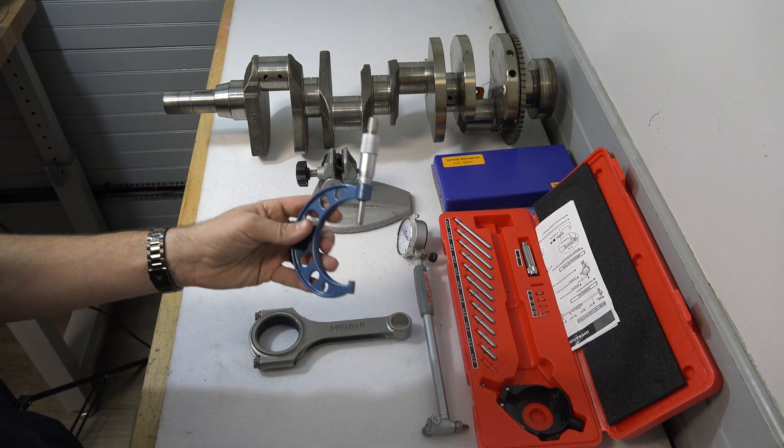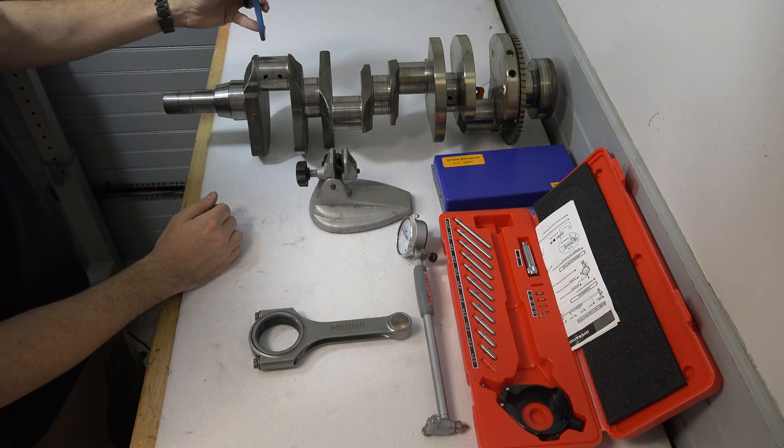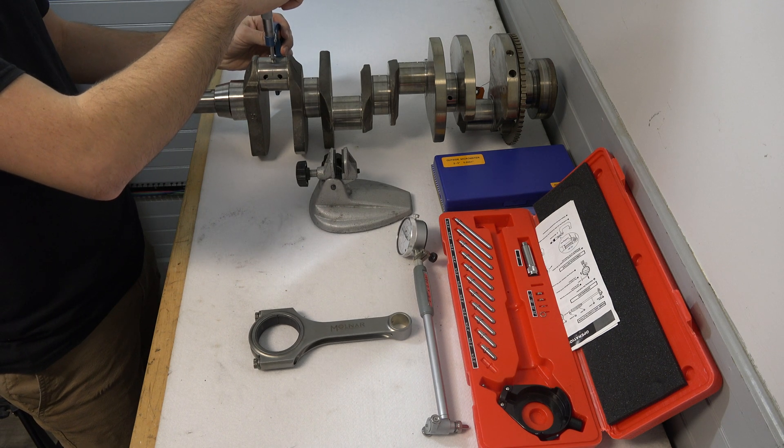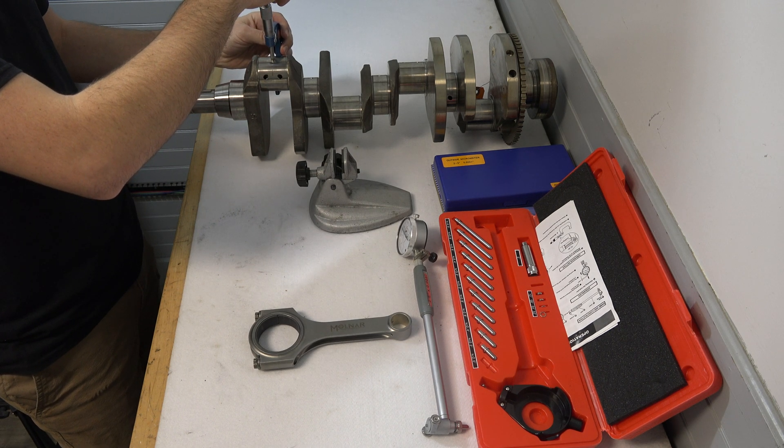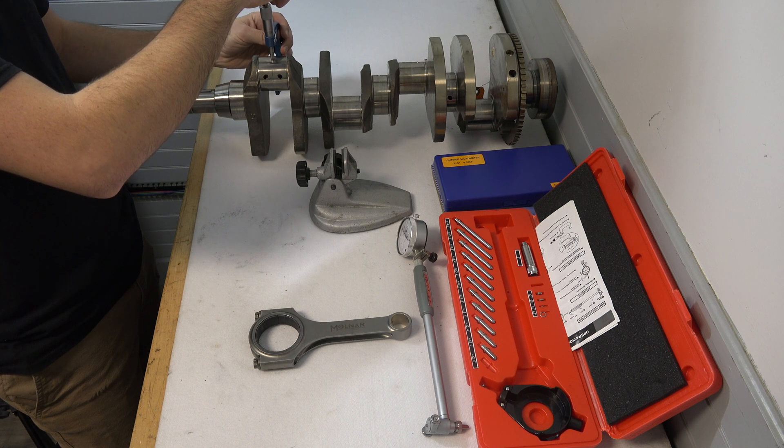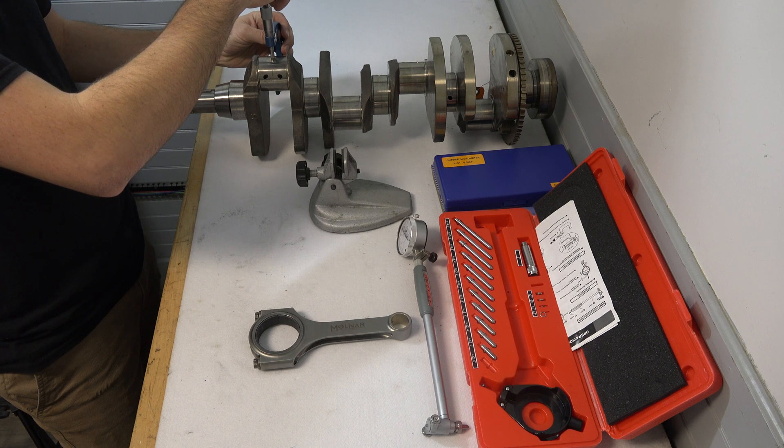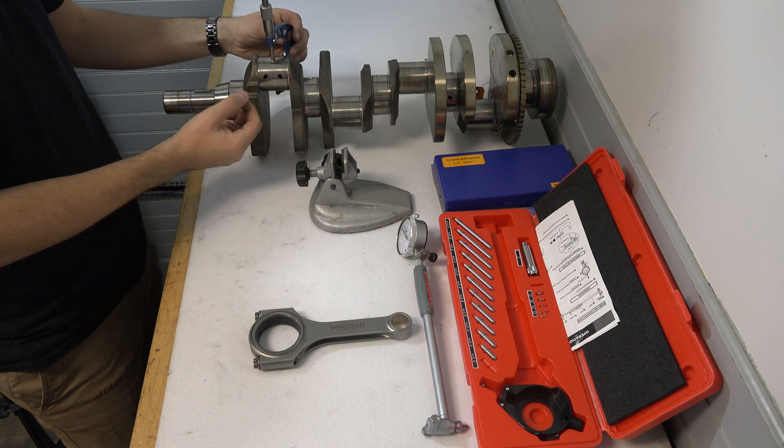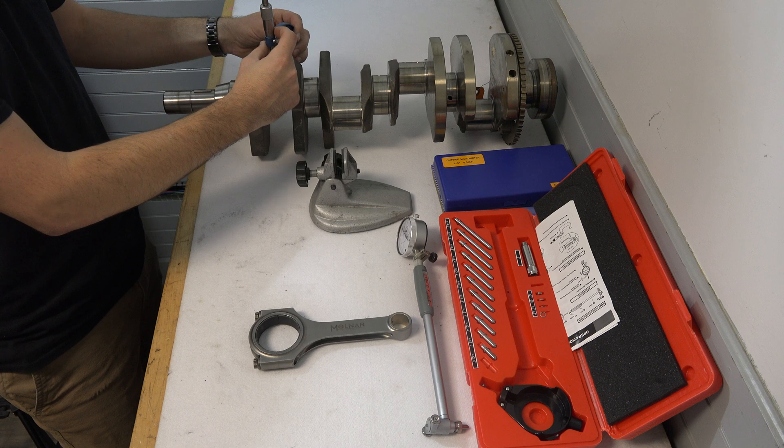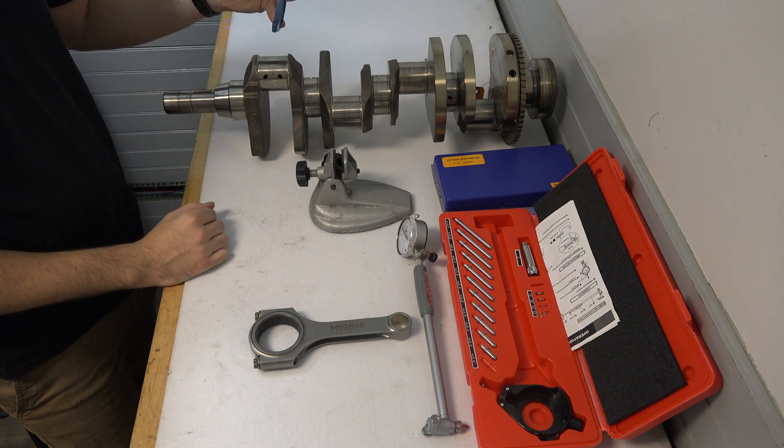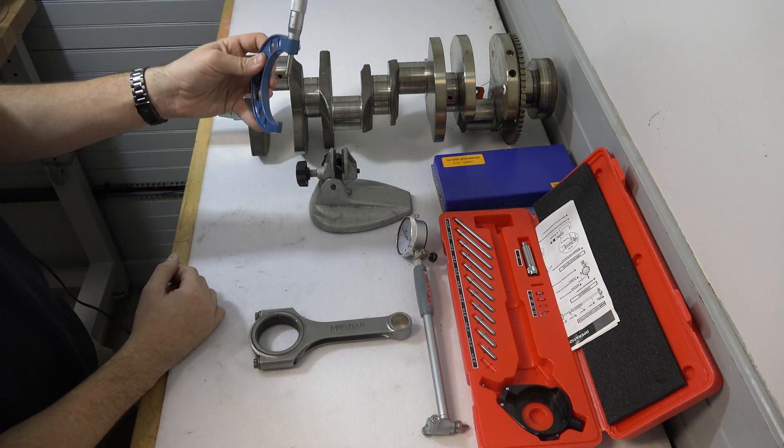So now we're going to take our micrometer and come over to our tank on our rod drum here. We're going to come down until we hear it ratchet and we're going to work the micrometer back and forth. We're then going to lock it down with the lock here. Pull our micrometer off of our crankshaft very carefully. Don't want to scratch it.